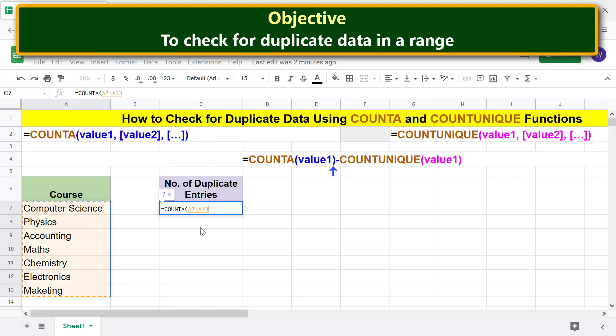Type the closing parenthesis, type the minus symbol, type COUNTUNIQUE and select COUNTUNIQUE.